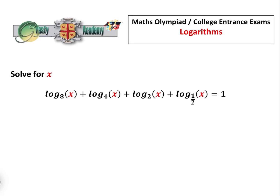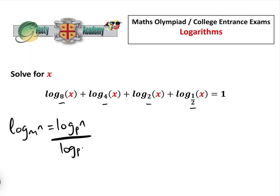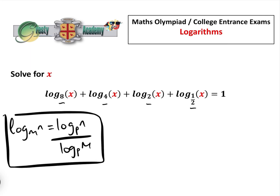This is an interesting question on logs. What we have to do is use the formula for changing the base of logs, because we've got one here base eight, one here base four, one here base two, and one here base half. The formula for changing the base of logs is: log to the base m of n equals log to the base p of n over log to the base p of m, and we're going to use that to change all of the bases to the same base.